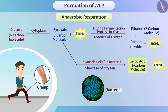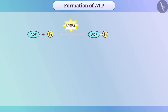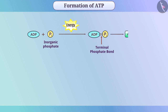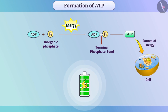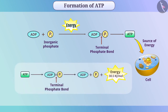The energy produced in respiration is used immediately for formation of a bond between ADP and inorganic phosphate, which leads to formation of an ATP molecule — like charging a battery. Like a charged battery, ATP is used as a source of energy for reactions in the cell. Whenever there is a requirement of energy, it is obtained by breaking the bonds between the phosphate molecules of ATP.